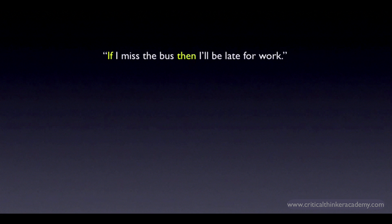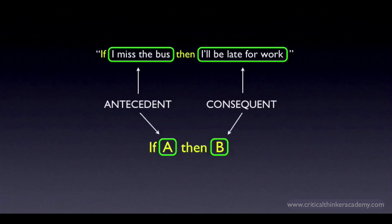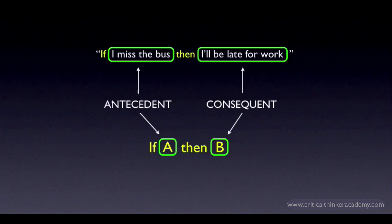We have names for the component parts of the conditional. The first part — the claim that comes after the 'if' — is called the antecedent of the conditional. The second part — the claim that comes after the 'then' — is called the consequent of the conditional. The names are a bit obscure, but they do convey a sense of the role the claims are playing. 'Antecedent' is what comes before; the consequent is a consequence of what has come before. The names are handy to know because they're used in translation exercises where you're asked to express a bit of natural language as a conditional.